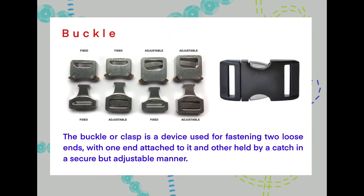Let's have a look at the buckle. This one you're probably more familiar with because you're used to seeing them in places such as seat belts in cars. The buckle or clasp is a device used for fastening two loose ends, with one end attached to it and the other held by a catch in a secure but adjustable manner. Another common place to find the buckle is on trousers.